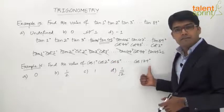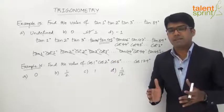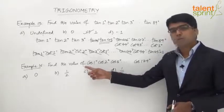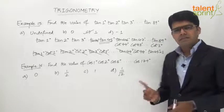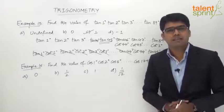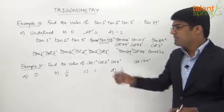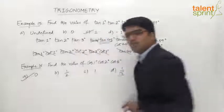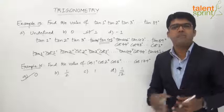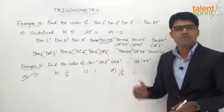Among these 179 terms, one of them is cos 90°, and we know that cos 90° = 0. Since this is a product of all 179 terms, even if just one term is 0, the entire product equals 0. Therefore, the answer for this question — without putting pen to paper — is option A: 0. The reason is simply that cos 90° appears in the series and equals 0, making the complete product 0.